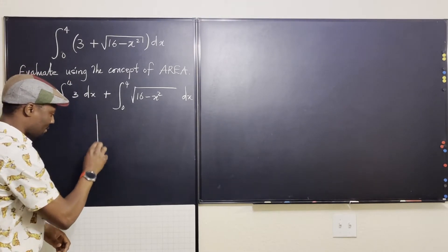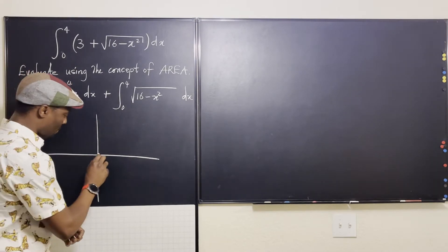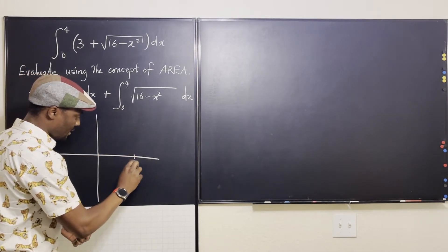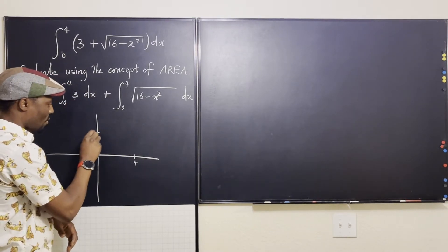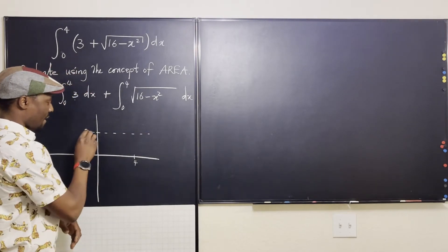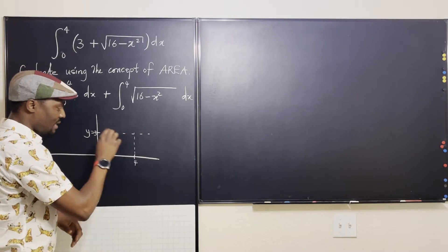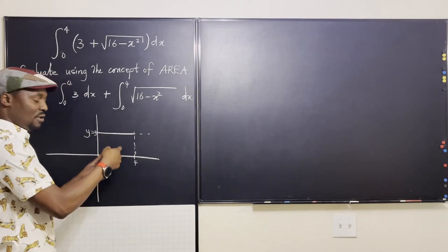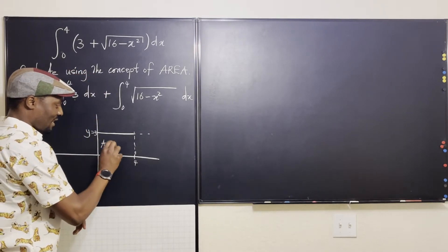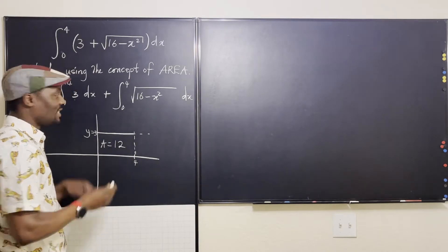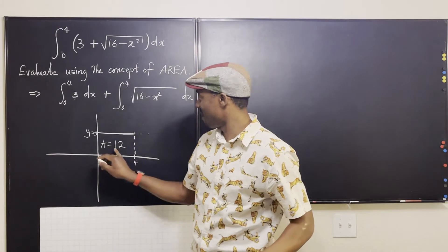When you plot the graph, you're going from 0 to 4 on the x-axis, and the function is y equals 3 — that's the horizontal line y equals 3. So what is the area bounded by these two lines? This line stops at x = 4, and the shape is a rectangle. So this is 4 multiplied by 3, and the area equals 12. That's the first part of the solution.